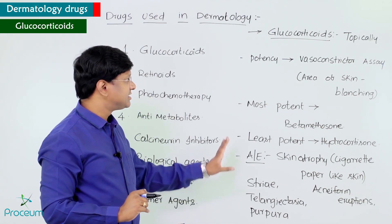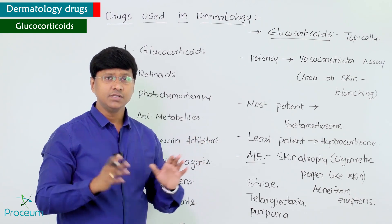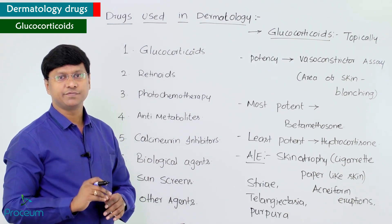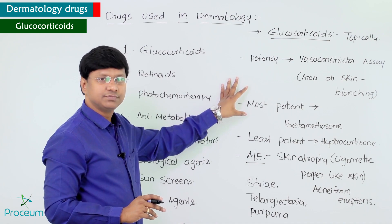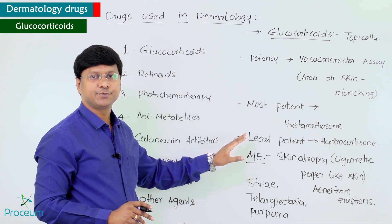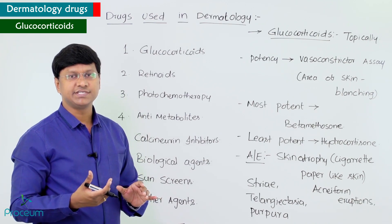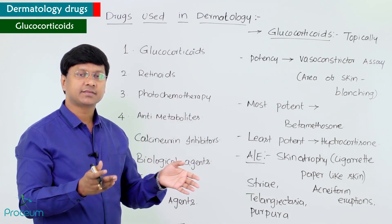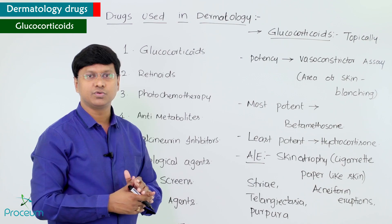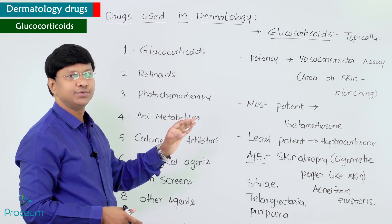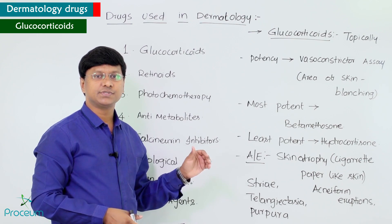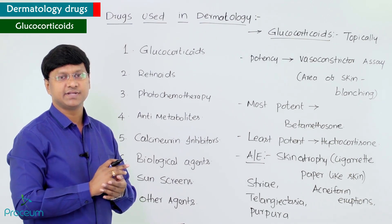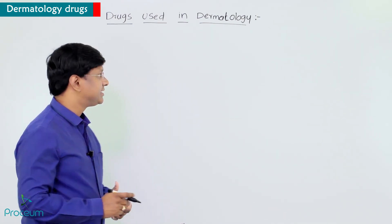To summarize glucocorticoids: betamethasone is the most potent, hydrocortisone is the least potent, and potency is measured by the vasoconstrictor assay. Chronic use adverse effects include skin atrophy, striae, telangiectasia, purpura, and acneform eruptions. Now let me discuss retinoids.